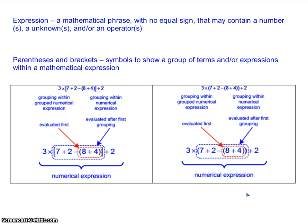Those symbols also tell us the order that should be worked. You always start with the innermost parentheses first when working with parentheses. Because in this case the rounded parentheses are inside the brackets, we would start with the rounded parentheses first — we'd work the 8 plus 4 first. Then, once we solve that, we would move outward to the brackets and work with what's inside the brackets. And once that's complete, we can work outside to finish up the remaining part of the expression.